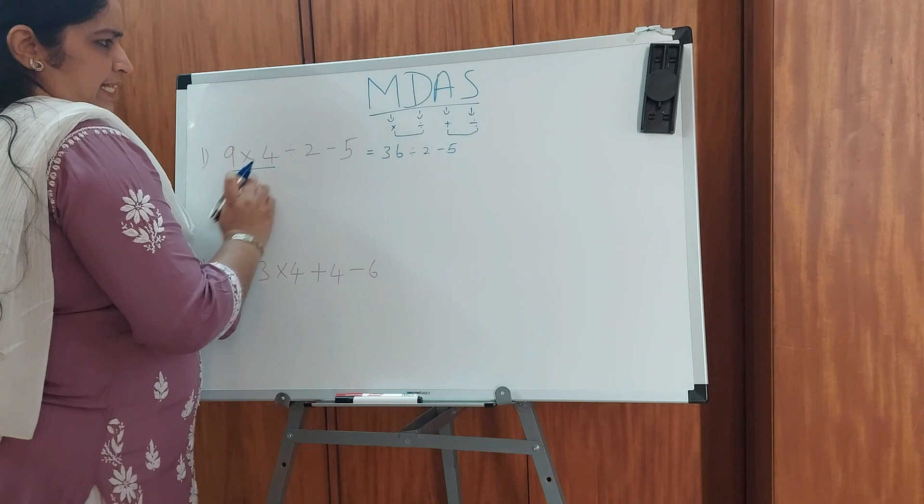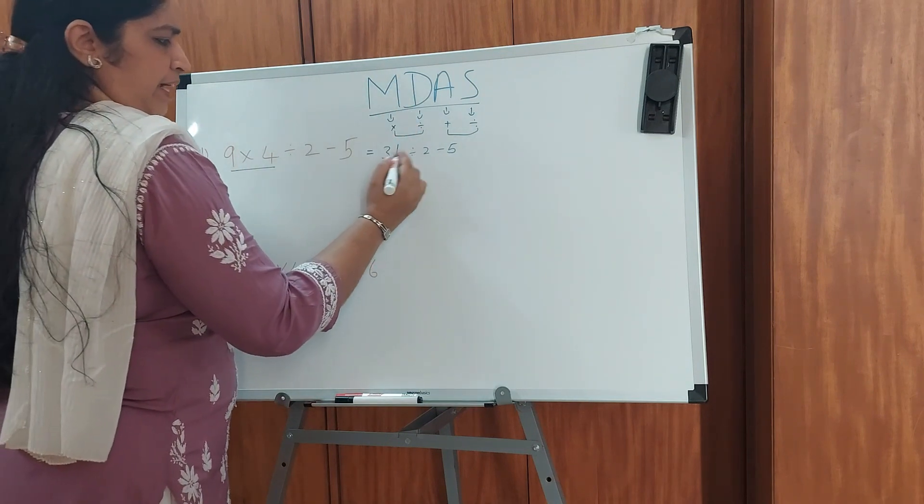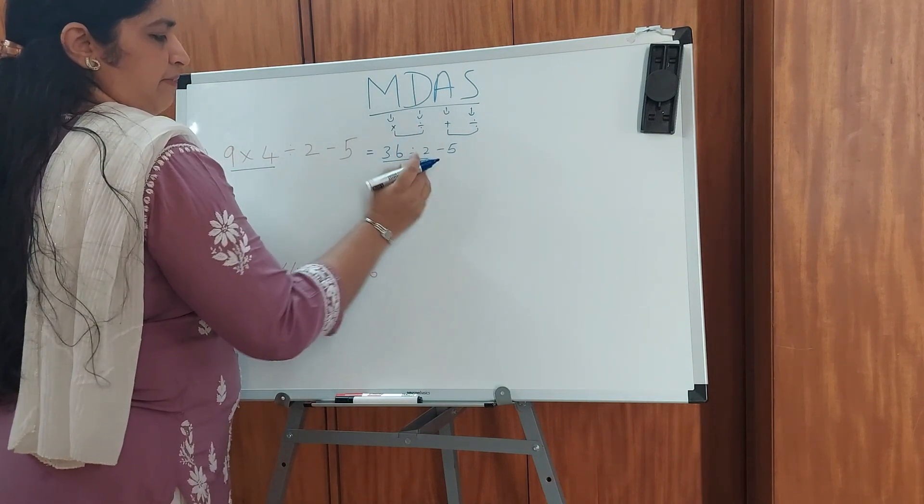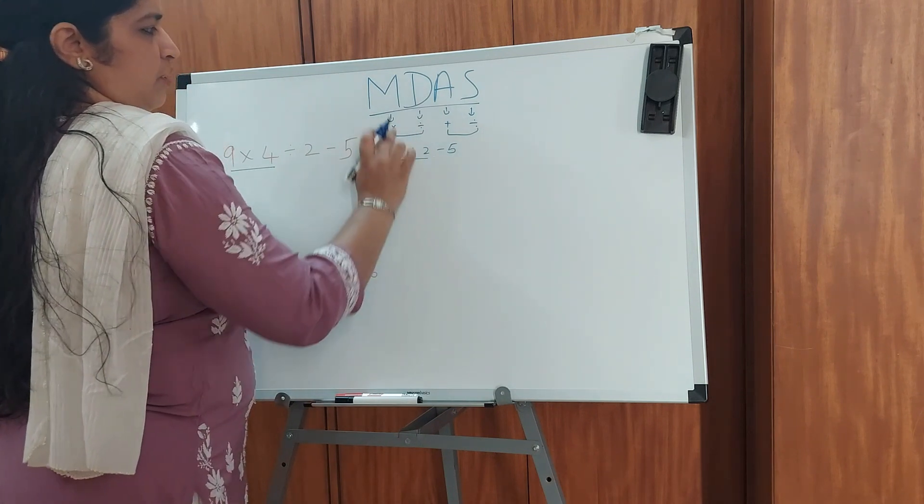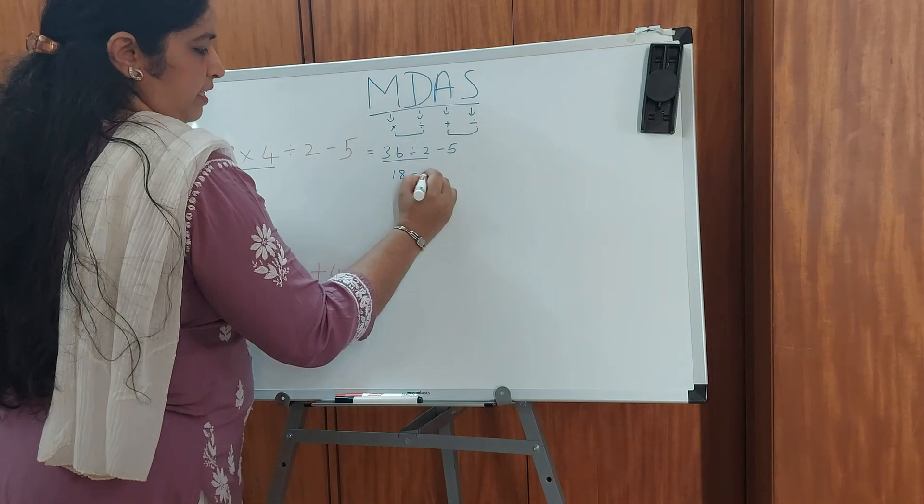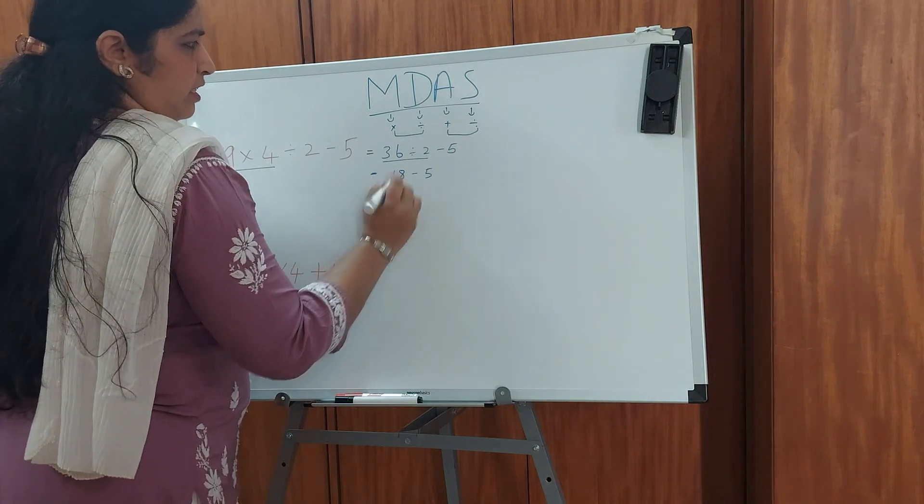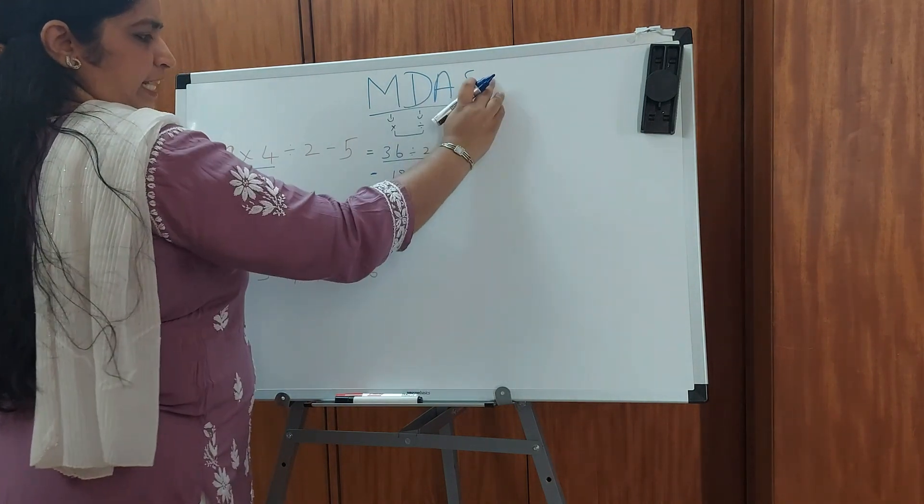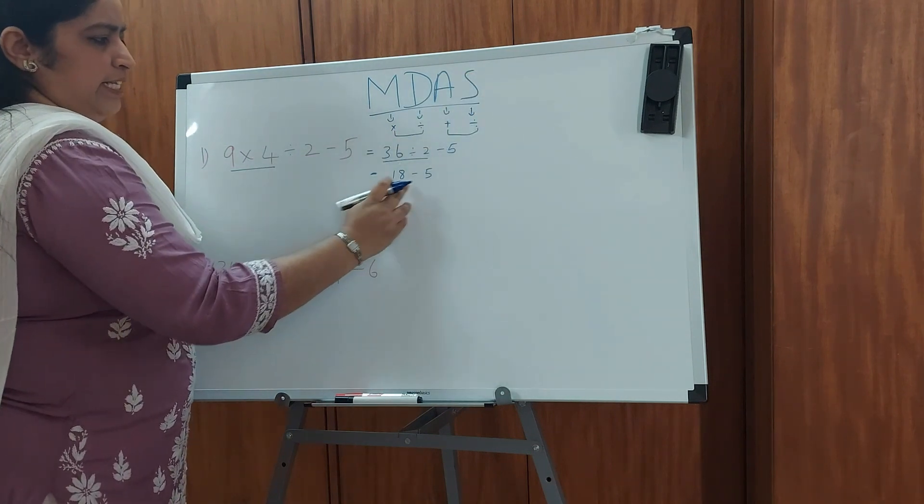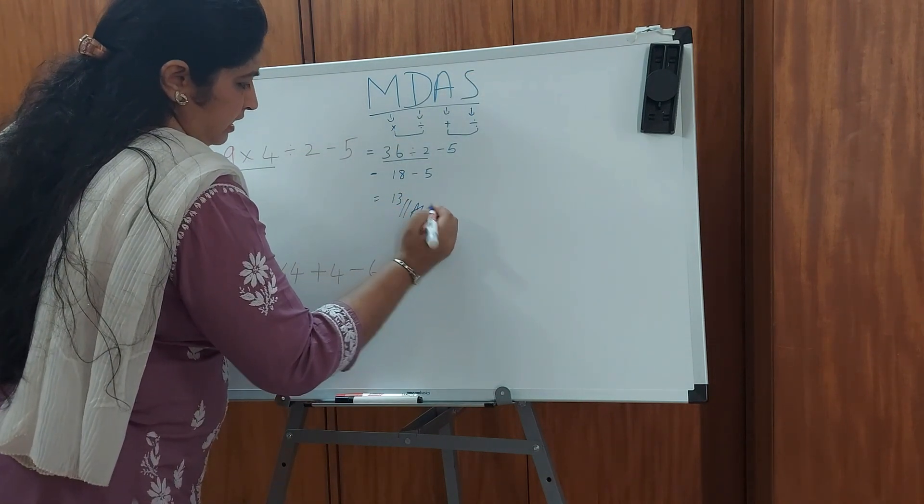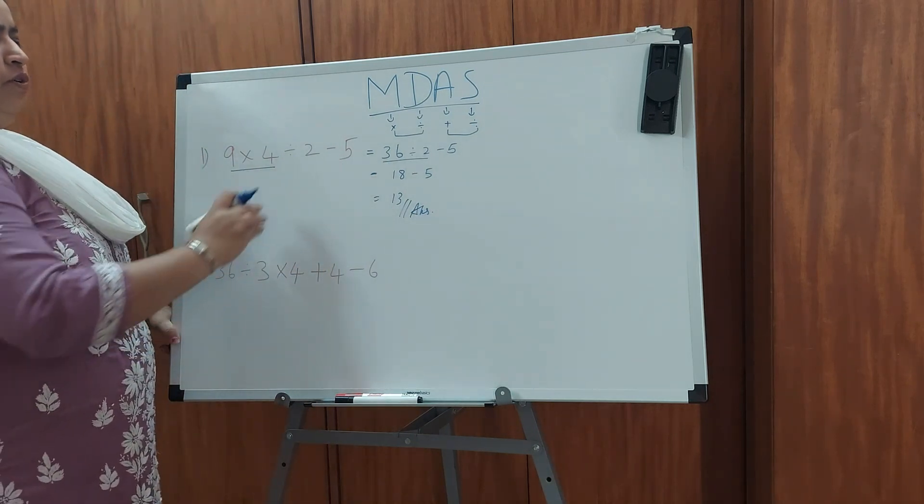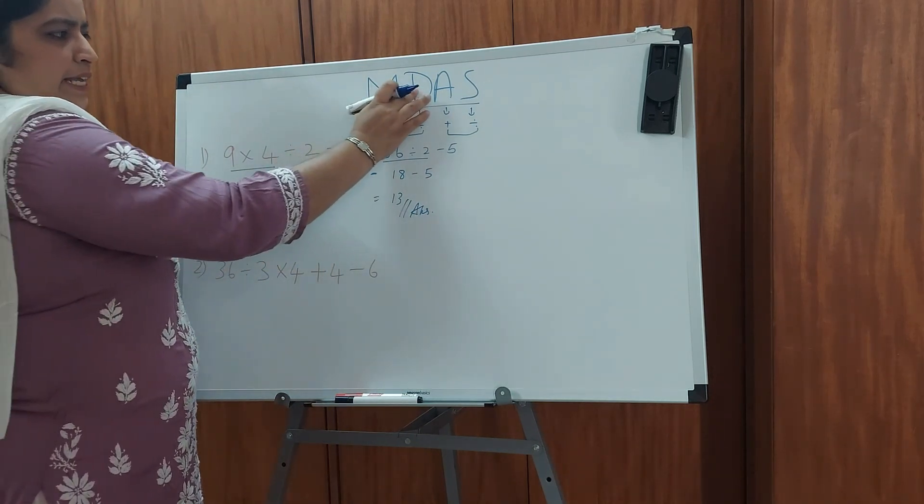Now what is our second step? That is division. Now we are going to divide these two numbers. 36 divided by 2. So 36 divided by 2 which is 18. So our division is done. Now the remaining minus 5. As you could see, there is no addition here. So directly we are going for subtraction. So 18 minus 5 which is 13. So 13 is our answer. So we have to apply the MDAS rule.